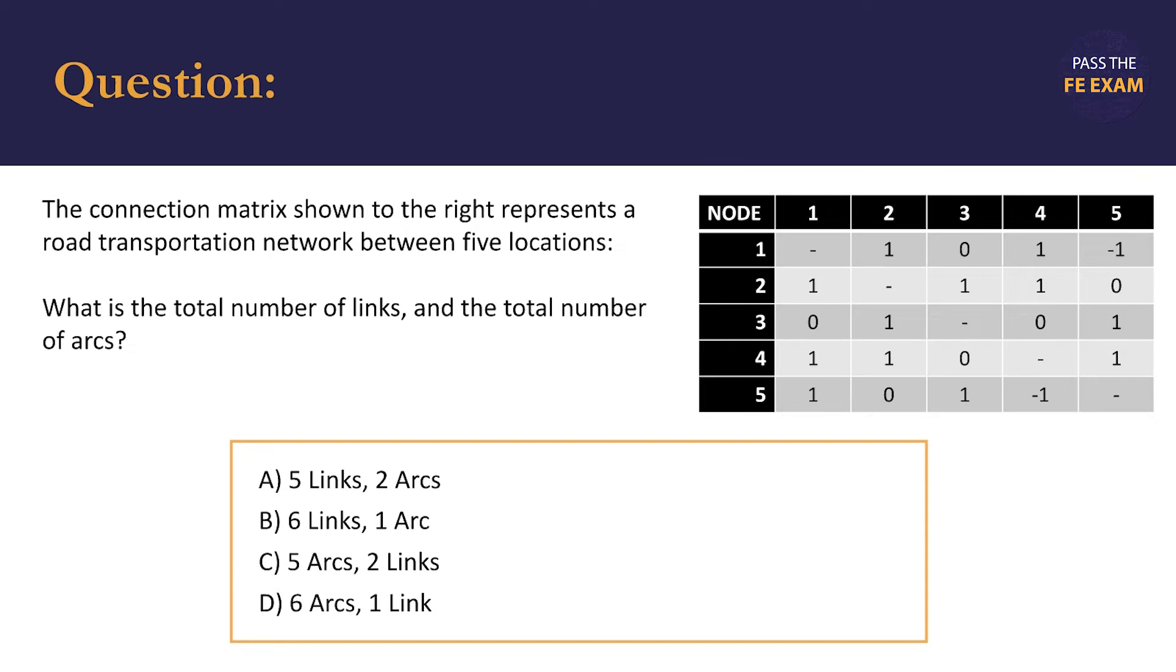We're given the options of option A, five links and two arcs; option B, six links and one arc; option C, five arcs and two links; and option D, six arcs and one link.